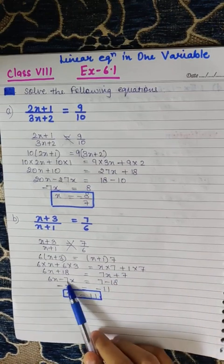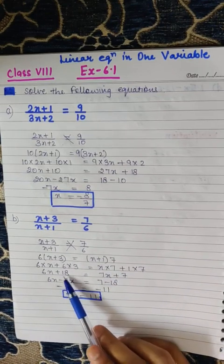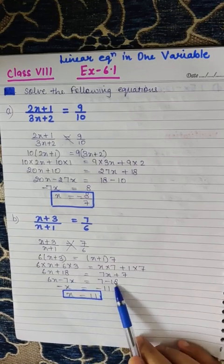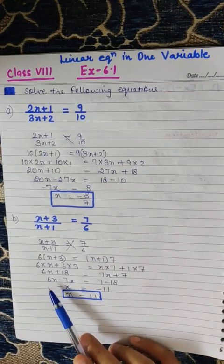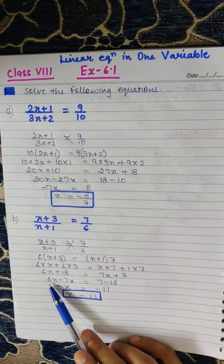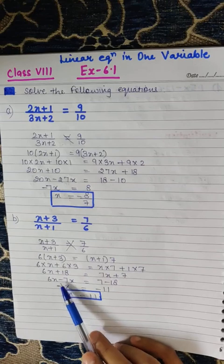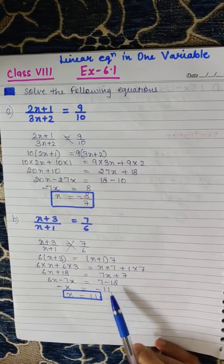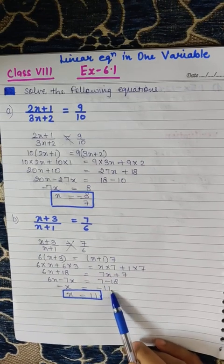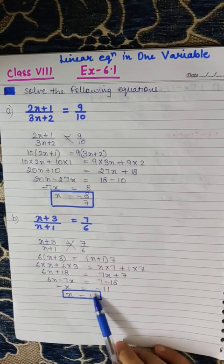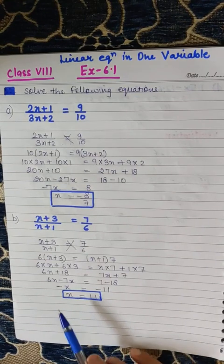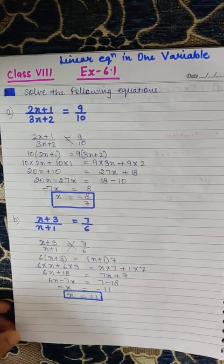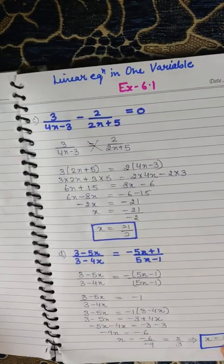Move 7x from the right hand side to the left hand side; plus 7x becomes minus 7x. And plus 18 becomes minus 18. So, 6x minus 7x is minus x, and 7 minus 18 is minus 11. On cancelling the minus signs, we get x is equal to 11.